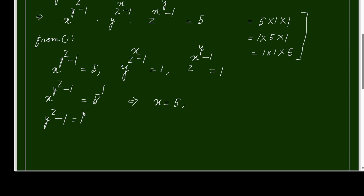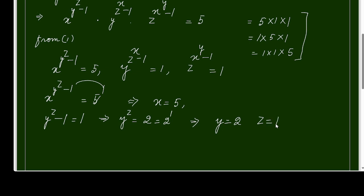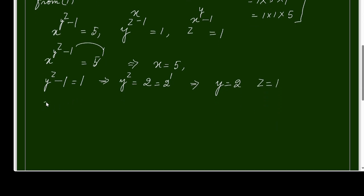With x = 5, equating the exponent: y^z − 1 = 1, so y^z = 2. Since 2 is a prime number, it can only be written as 2^1, so y = 2 and z = 1. The first solution is x = 5, y = 2, z = 1.